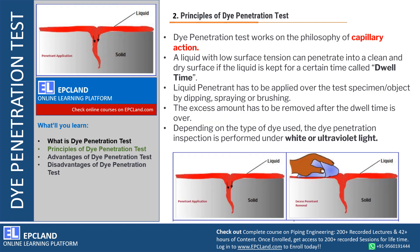Now let us talk about the principles of Dye Penetration Test. This test works on the philosophy of capillary action. There is a phenomenon where a liquid with low surface tension can penetrate into a clean, dry surface. The condition is that the liquid must be kept for a certain time period, which is called dwell time.